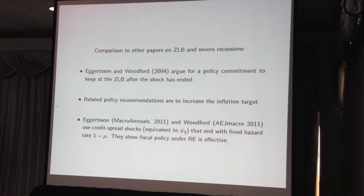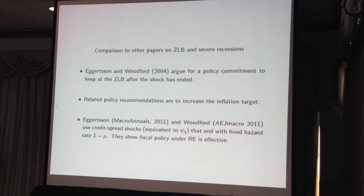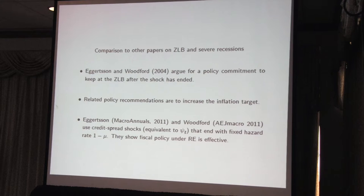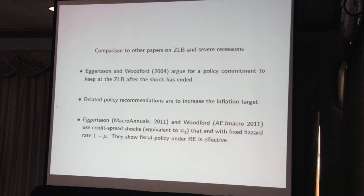Let me briefly compare to other approaches to the zero lower bound and severe recessions. From the rational expectations point of view, Eggertsson and Woodford initially pointed out that you could get into the zero lower bound from something like a discount factor shock. They argued from a policy point of view that one way to get around this was a commitment of monetary policy to stay at the zero lower bound after the shock ended. Related policy recommendations have been to increase the inflation target. More recently, Eggertsson and Woodford have talked about modeling the shock as a credit spread shock. They show that fiscal policy in this situation, under rational expectations, could be quite effective.